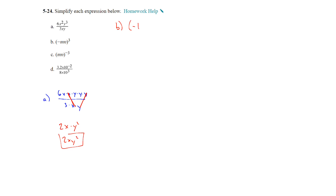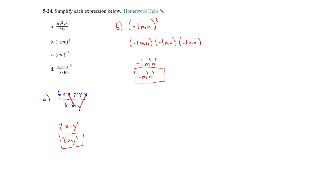On part b, we have negative 1 times mn, raised to the third power. I'm going to expand this out so you can see everything that's happening. Negative 1 times negative 1 times negative 1 is still negative 1; m times itself 3 times is m cubed; and n times itself 3 times is n cubed. So the answer is negative m cubed times n cubed.